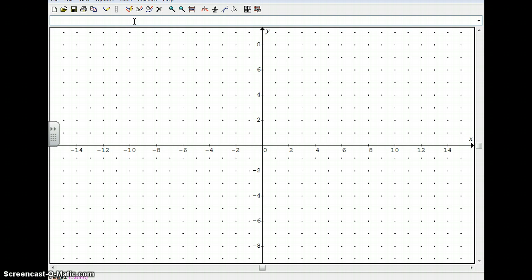Now, in Graphmatica, you can do things like this: R squared equals something. And if you say something like 3 sine 2 theta, 2 T, and graph that, you get what's called a lemniscate. You can look that one up in the book.